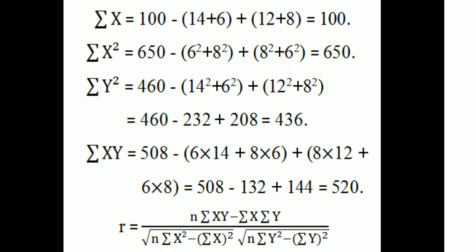Summation x-squared becomes 650 minus (6-squared plus 8-squared) plus (8-squared plus 6-squared) = 650. Summation y-squared becomes 460 minus (14-squared plus 6-squared) plus (12-squared plus 8-squared) = 436. Summation xy becomes 508 minus (6 times 14 plus 8 times 6) plus (8 times 12 plus 6 times 8) = 520.